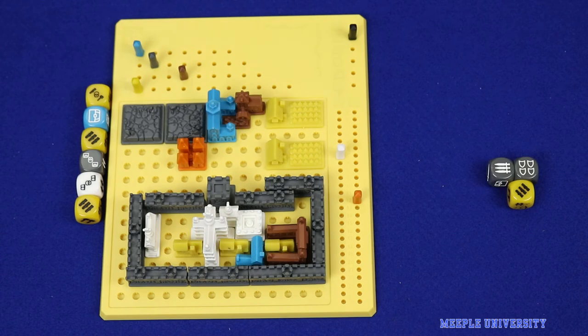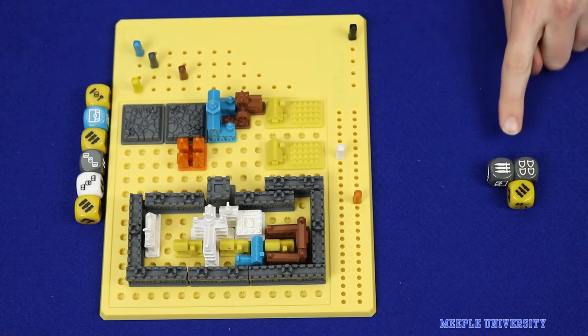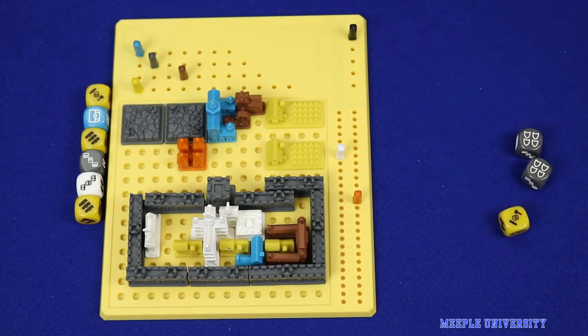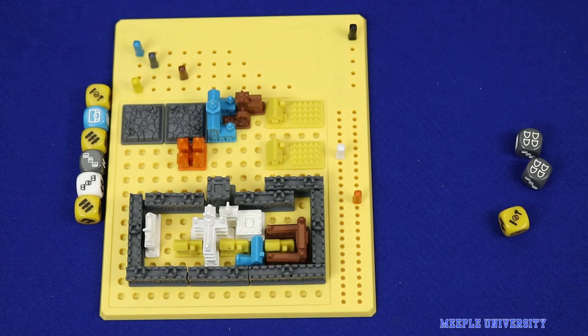The game also comes with rule modifications for solo play. Using a dummy player's noble dice to determine whether or not you're extorted. And you'll compare your final score against a table in the book.